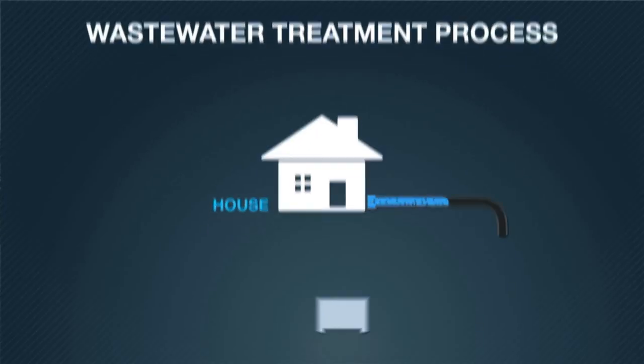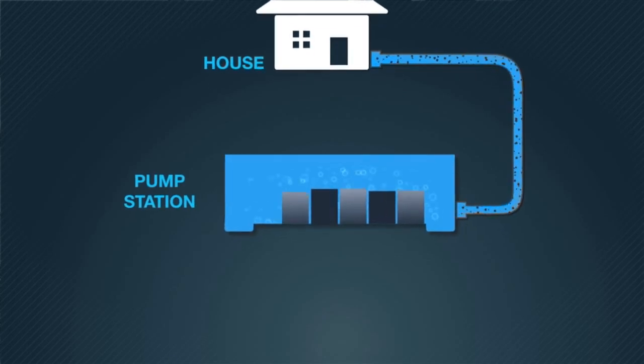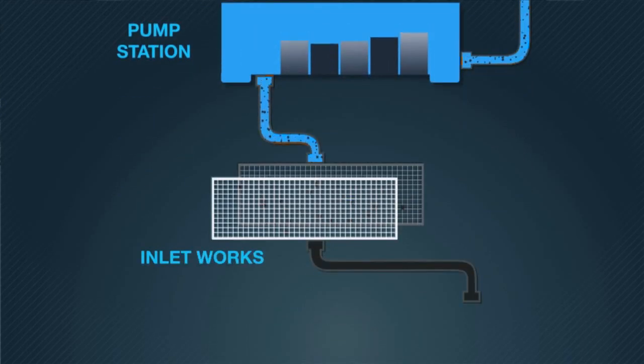Once the sewage enters the plant, it flows through two screens that remove litter from the sewage, such as cotton buds, bits of plastic and other debris.